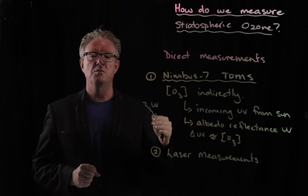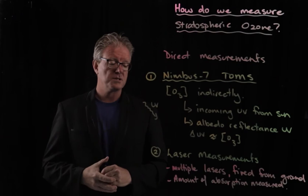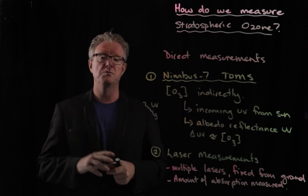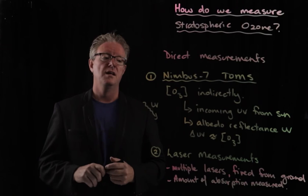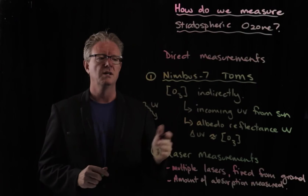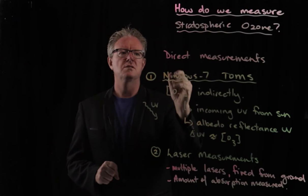Multiple lasers are fired from the ground near telescopes, and the comparison of the standard or guide laser as well as the measurement laser gives the amount of absorption of laser light at a specific wavelength that's characteristic to the vibrational frequency of the bonds in the ozone molecule. Therefore we can work out the concentration of ozone. So there are two direct measurements that we can use to monitor the concentration of ozone.